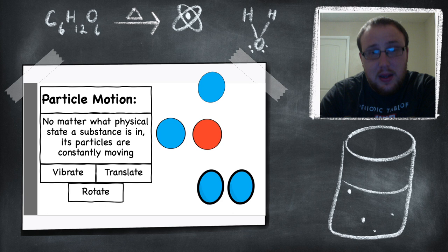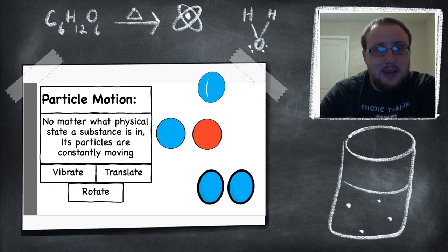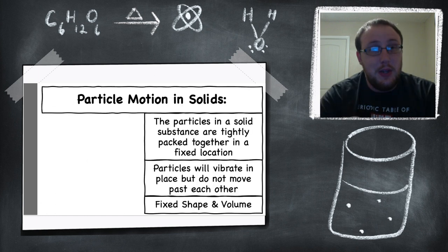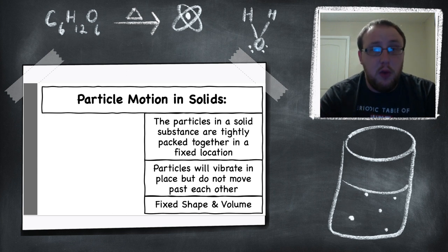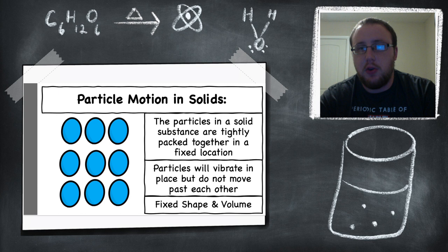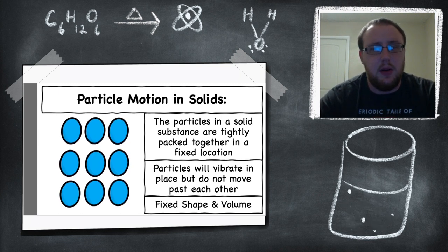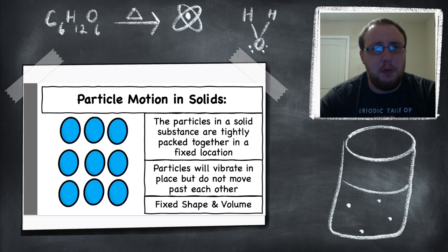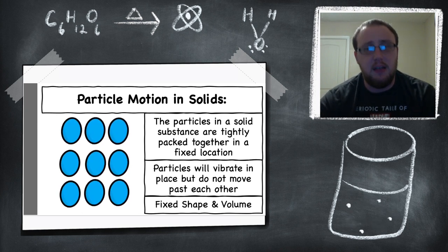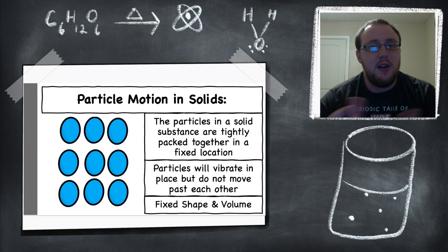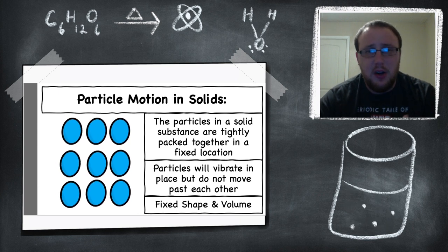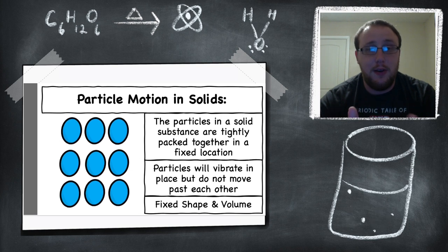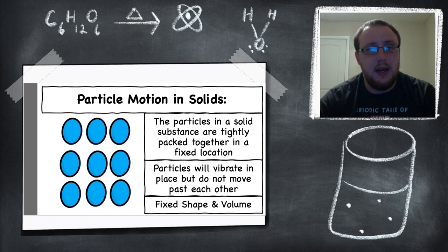Particles, no matter what the substance is, are moving within that substance — it can be a solid, a liquid, or a gas. The particles in solid substances are tightly packed together and are in a fixed location, so these substances are more likely to vibrate. Molecules in a solid are right up next to each other, tightly bound together, and they don't want to move around or move past each other. They like where they're at, so they just vibrate really quickly back and forth. This is what gives a solid a fixed shape and volume.